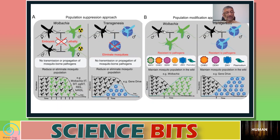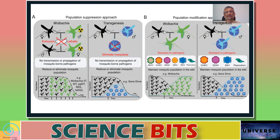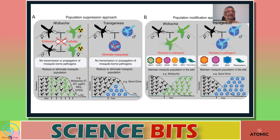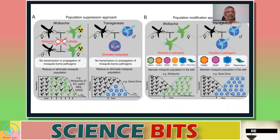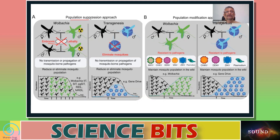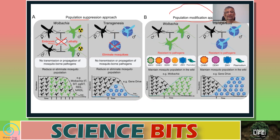Biotechnology-based control of mosquitoes follows two approaches. The first is population suppression — reducing the number of mosquitoes through means such as embryonic lethality or transgenesis, where male mosquitoes are genetically altered so they cannot produce offspring.